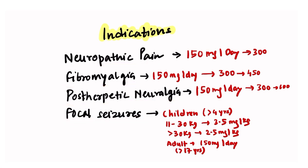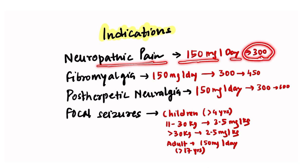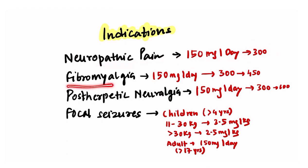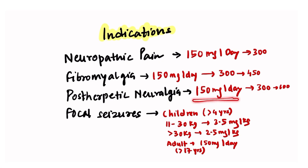The doses for pregabalin are as follows: for neuropathic pain, 150 mg per day, which can be increased to 300 mg per day. For fibromyalgia, the initial dose is 150 mg per day and can be increased to 300 or 450 mg per day. For post-herpetic neuralgia, it is initiated at 150 mg per day and can be increased to 300 and then 600 mg per day.